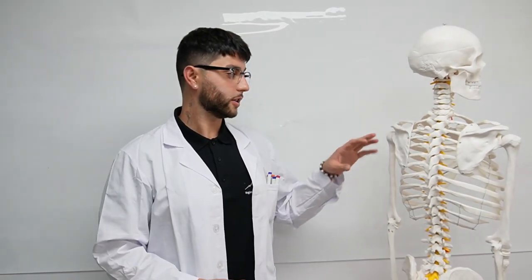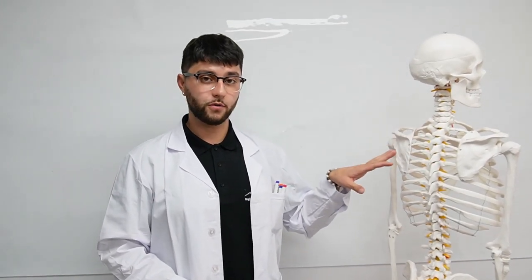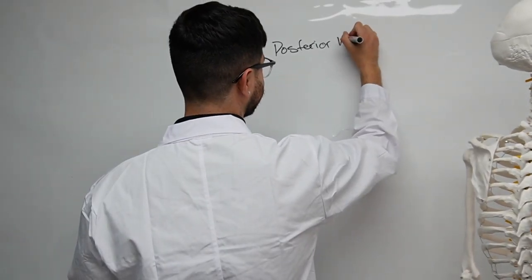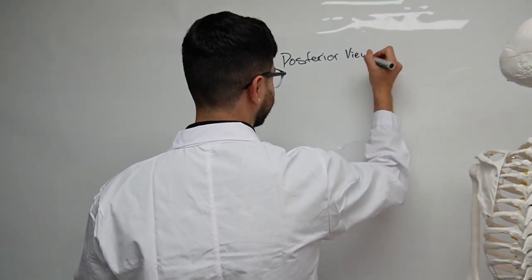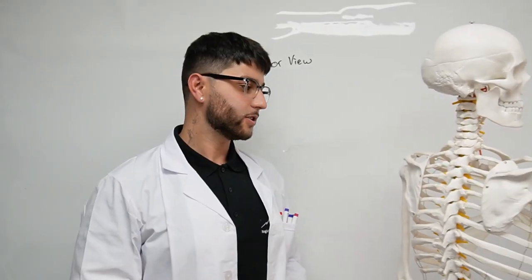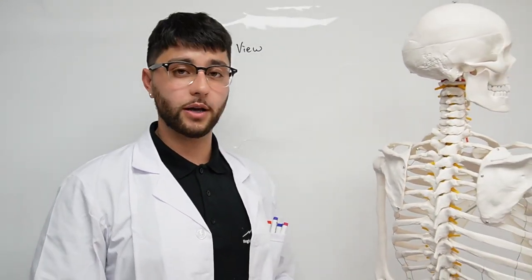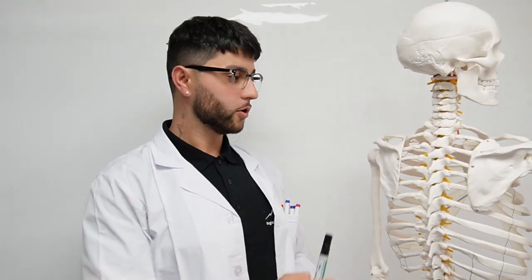We're going to get into the scapula and look at the posterior view, also known as the back of the scapula. The shape of the scapula is more of a triangular shape.